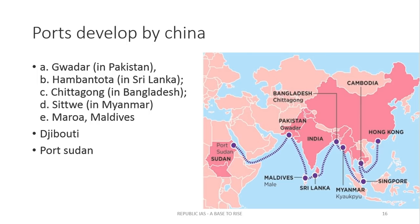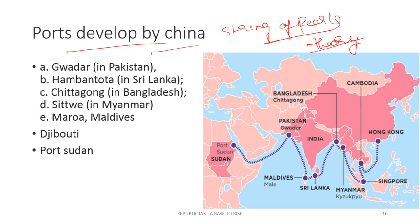The next topic with respect to India-China relations is the String of Pearls. It is a geopolitical theory based upon Chinese intentions. One should know about Chinese port development — wherever China develops ports, they tend to dominate in the Indian Ocean region. In the String of Pearls theory, the Chinese intention behind developing ports is examined. From the Chinese mainland to the port of Sudan in the Red Sea, all ports that China is developing along this line, when connected, produce a strategic encircling area — that is the String of Pearls.